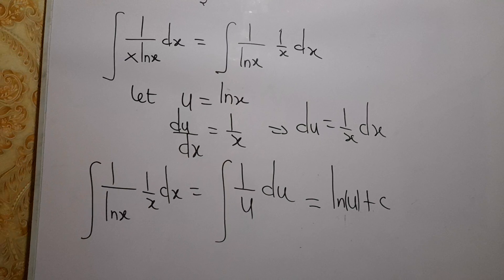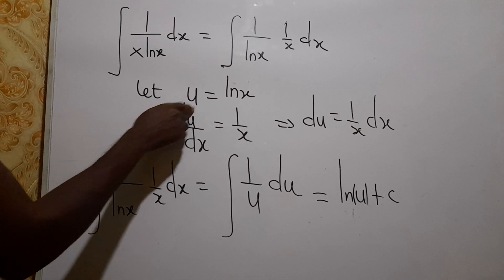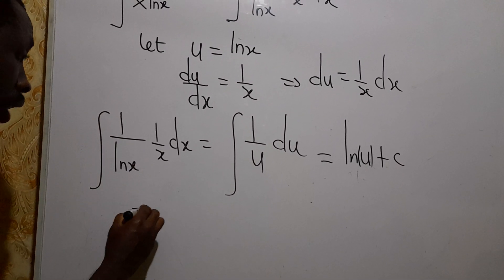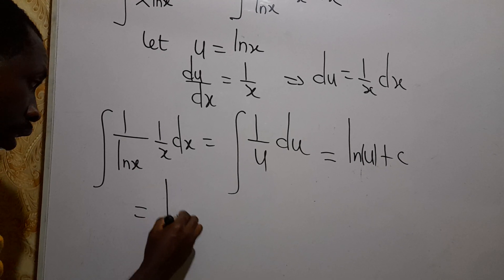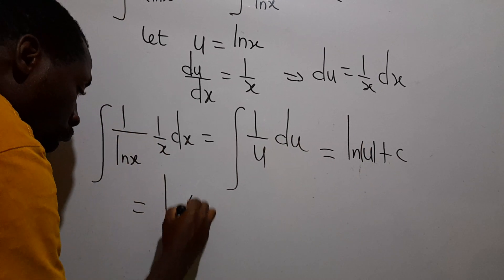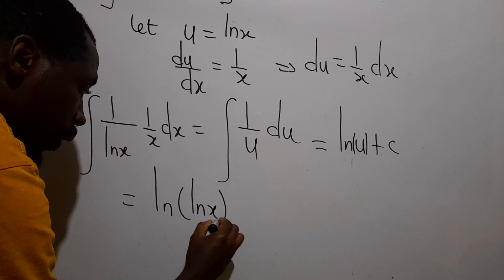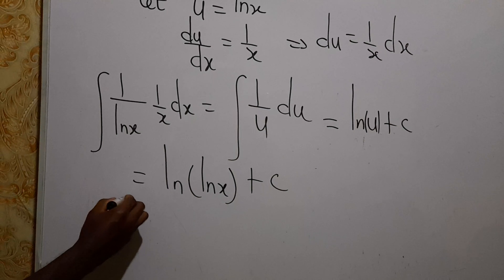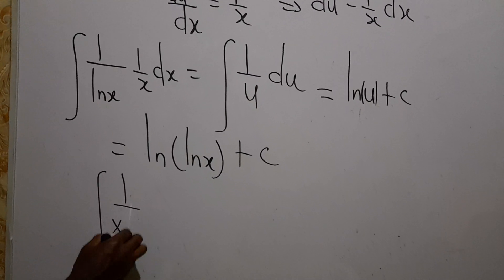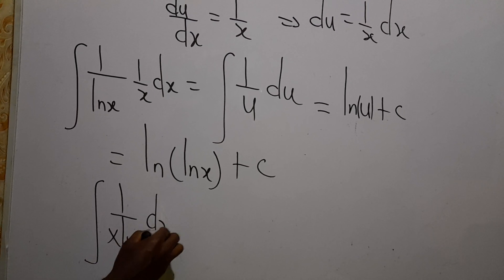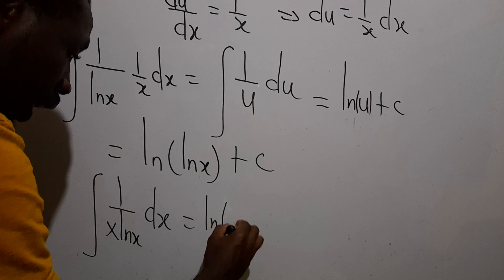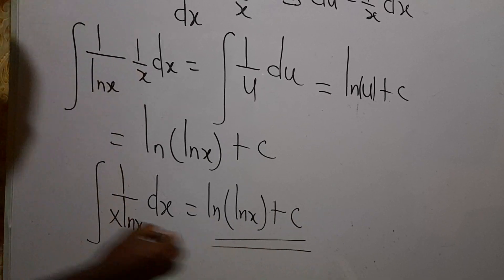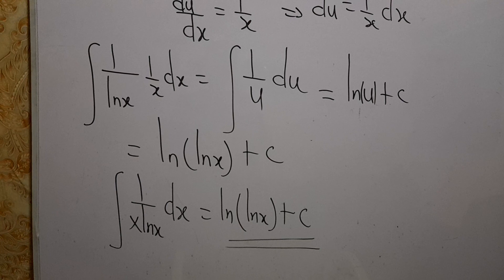Since u equals ln(x), we substitute back. This gives us ln|ln(x)| plus our constant of integration C. We can therefore conclude that the integral of 1 over x·ln(x) dx equals ln|ln(x)| + C.